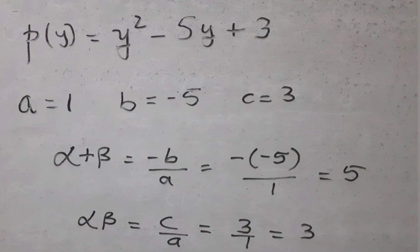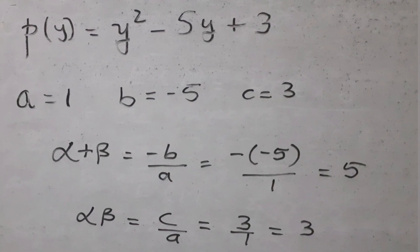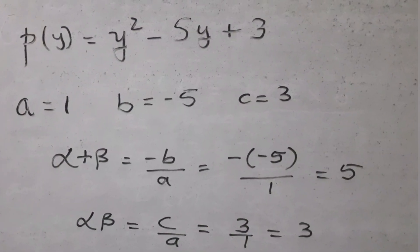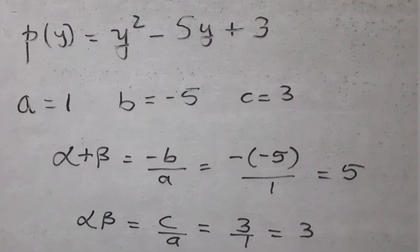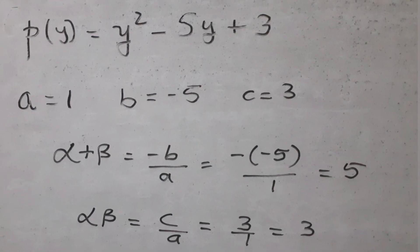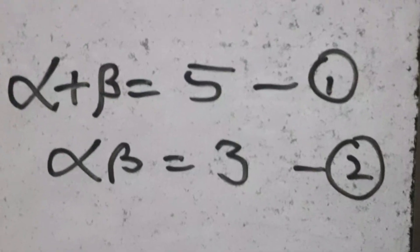Use the formula for the sum of zeros alpha plus beta and product of zeros alpha into beta, so alpha plus beta equal to 5 and alpha beta equal to 3.